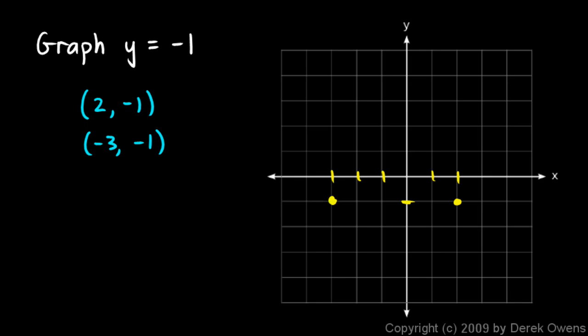...y is negative 1, that puts me there. You can see I get all the points that are 1 below the origin. So this is the graph — it's a horizontal line at the position y equals negative 1. This position right here on the y-axis is y equals negative 1, and this equation tells us that y equals negative 1. So this graph is all the points that satisfy that equation — all the points that have a y coordinate of negative 1. I just picked 2, but I could have picked any number of them.